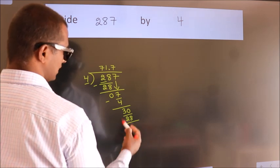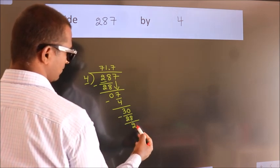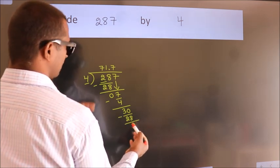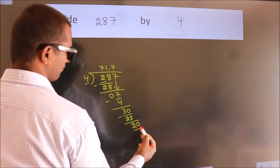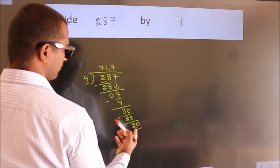Now we subtract. We get 2. After this, we already have the decimal, so directly take 0.